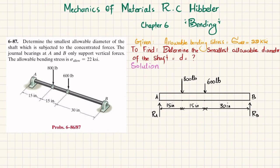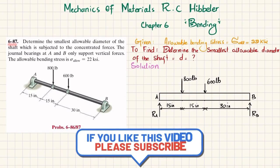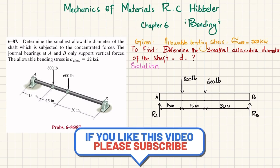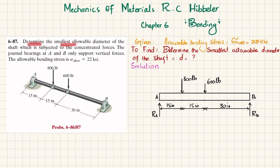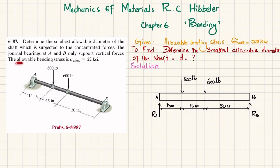Welcome back. In this video we are going to solve problem 6-87, taken from Chapter 6 on bending from the book Mechanics of Materials by R.C. Hibbeler. The statement is: determine the smallest allowable diameter of the shaft, which is subjected to concentrated forces. The general bearings at A and B only support vertical forces, and the allowable bending stress is 22 ksi.